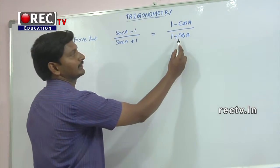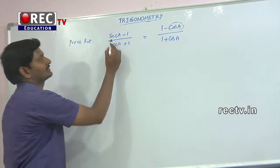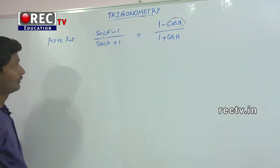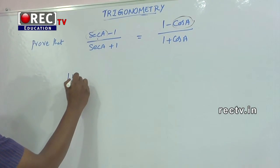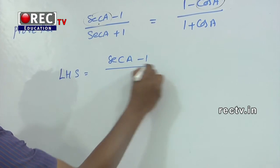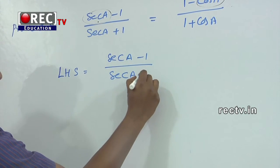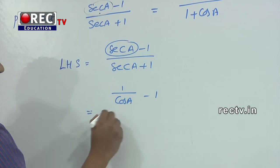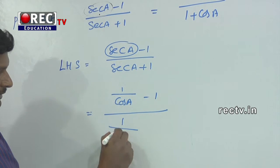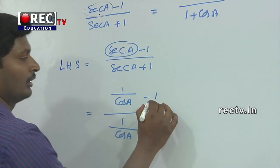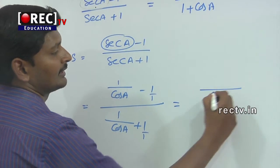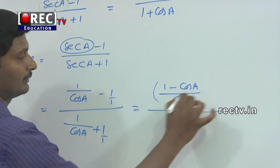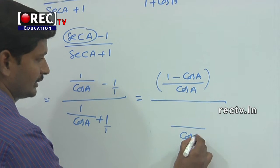We observe that the LHS is in terms of sec a and the RHS is in terms of cos a, so we convert sec a into cos a. LHS = (sec a - 1) / (sec a + 1). We know sec a = 1/cos a, so this becomes (1/cos a - 1) / (1/cos a + 1). Taking LCM = cos a in both numerator and denominator gives (1 - cos a) / cos a in the numerator and (1 + cos a) / cos a in the denominator.